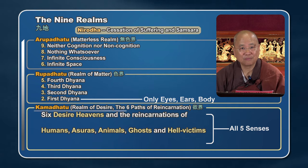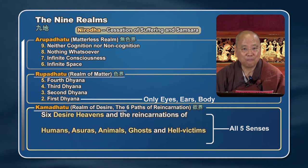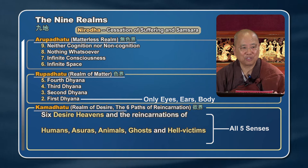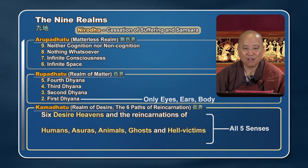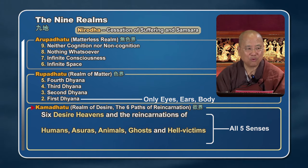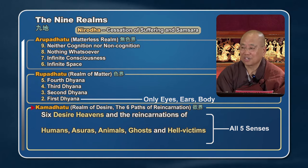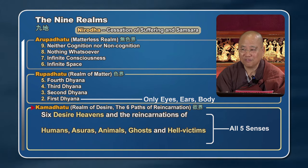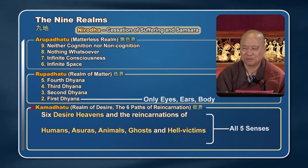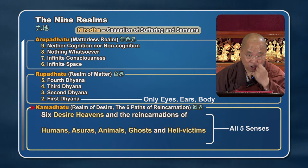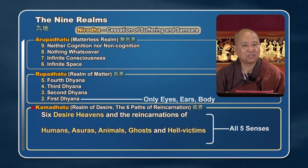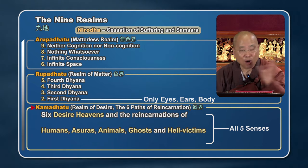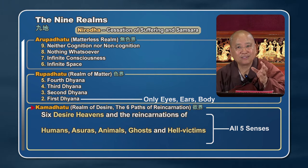We live in three worlds: the realm of desire, the realm of matter or form, and the formless realm. We are in the lowest level. The realm of desire includes insatiable desires — sexual desire, desire for food, wealth, reputation. There are six paths or reincarnations in this realm: heavenly beings, humans, asuras, animals, ghosts, and hell victims. Asuras are in heavens but are always competitively fighting with heavenly existence. We — all of us — are in this realm of desire.